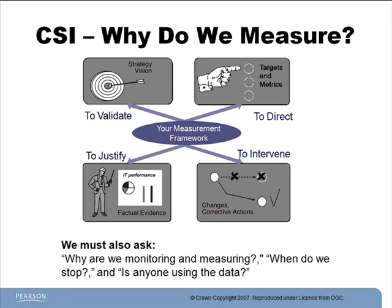When we say to validate, we're talking about validating our previous decisions. So if someone asks why you made a decision two years ago, we can say the numbers told us to do it. The D is direct — when we say to direct, we mean to direct our future activities. So if someone asks why you're choosing to go in a certain direction, it's because the numbers and the data are telling you to do that.